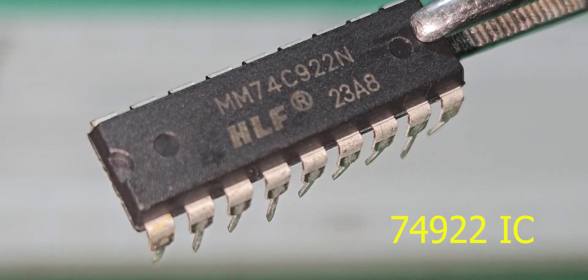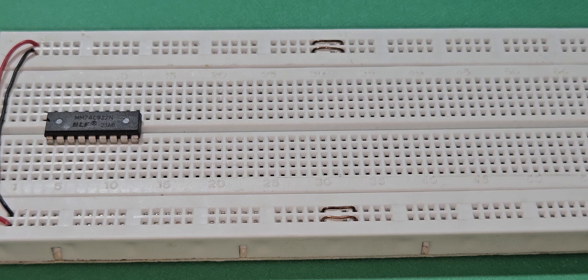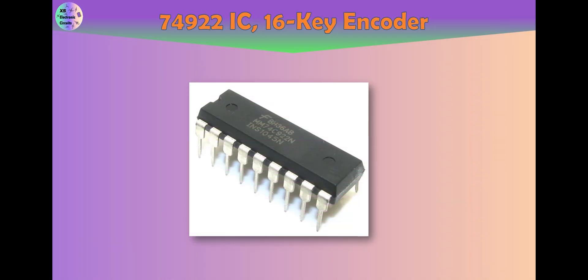The 74922 IC is a type of digital IC that includes a 16 key encoder. This IC has 8 inputs and 4 outputs.